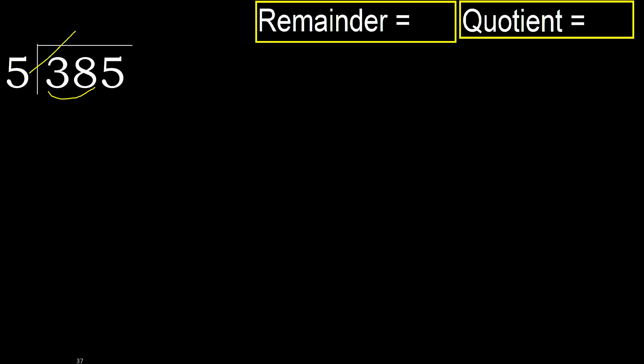5 multiplied by which number is nearest to 38, but not greater? 5 multiplied by 9 is greater, multiplied by 8 is greater, multiplied by 7 — 35 is not greater. Ok.